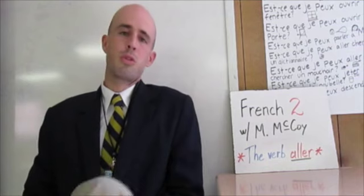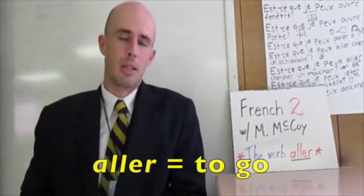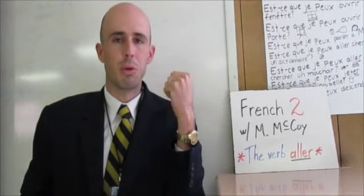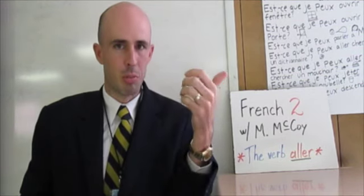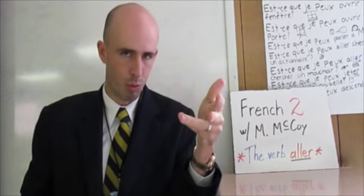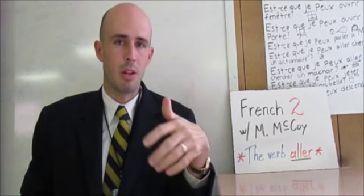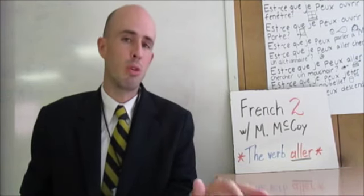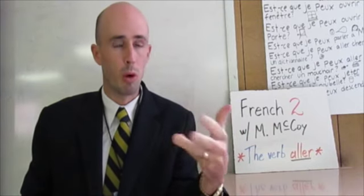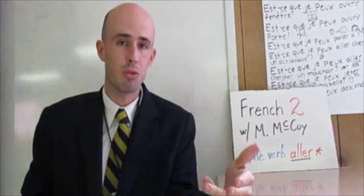Bonjour and welcome to French 2 with Mr. McGaulay. This is lesson 1 dedicated to the verb aller. Our learning objective for this lesson is for you, at the end of the lesson, to be able to conjugate the verb in the present indicative — that is, to state all six different forms of the verb — and also to pronounce them correctly. As you might imagine, this is a very useful verb in French. We're going to use it to talk about where we're going and also to describe our plans for the near or immediate future.